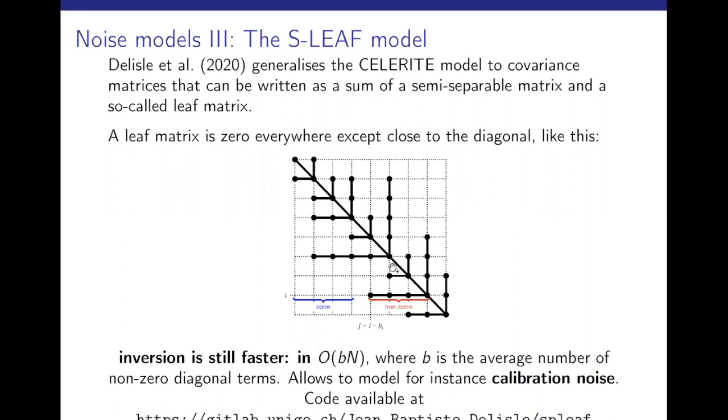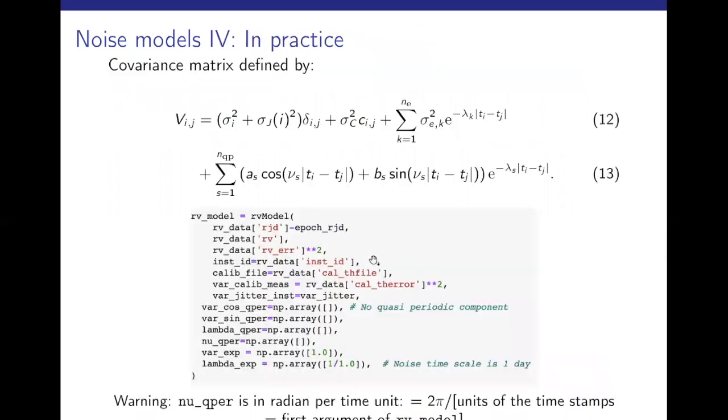And the inversion is much faster. Instead of n to the cube, where n is the number of observations, you are linear in n. And here you can check the celerity code. So in this, we have covariance matrices, which are in fact a little bit more general than celerity and they are called S-leaf models from this reference. The covariances are written as a sum of the celerity matrix or semi-separable matrix, in fact, and a leaf matrix.